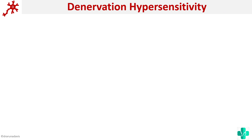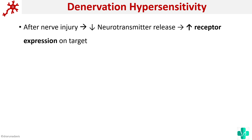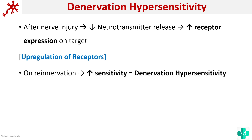There is a phenomenon called denervation hypersensitivity. After nerve injury there will be decreased neurotransmitter release. The body has a reflex mechanism whereby whenever neurotransmitter release decreases, it increases receptor expression on the target — in other words, there is up-regulation of receptors. So after nerve injury and recovery, on re-innervation there is increased sensitivity, and that is called denervation hypersensitivity. The main cause is up-regulation of receptors.